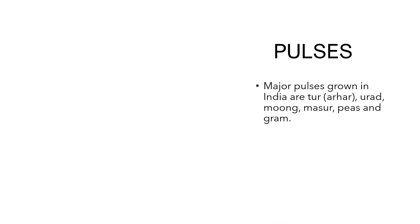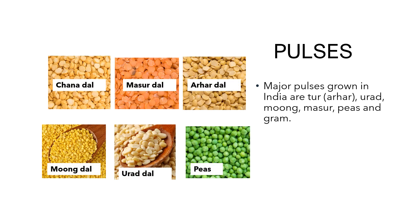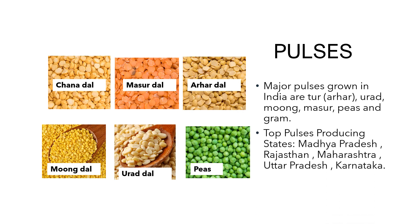India is the largest producer as well as the consumer of pulses in the world. Pulses are the major sources of protein in a vegetarian diet. Major pulses grown in India are Toor, Urad, Moong, Masoor, Peas and Gram. Top pulses producing states are Madhya Pradesh, Rajasthan, Maharashtra, Uttar Pradesh and Karnataka.